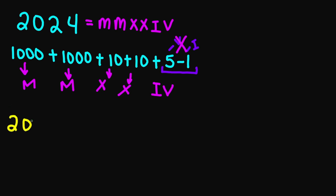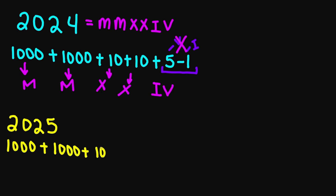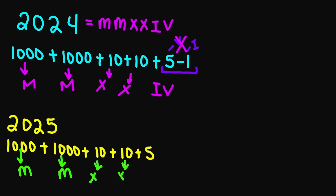What about two thousand twenty-five? I'm going to break this up into one thousand plus one thousand plus ten plus ten plus five. One thousand is M, one thousand is M, ten is X, ten is X again, and then your five will be V. So your final answer is going to be MMXXV.